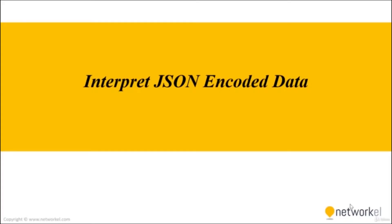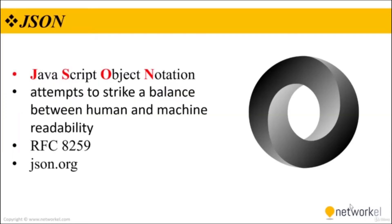In this section we will talk about interpreting JSON encoded data. JavaScript Object Notation attempts to strike a balance between human and machine readability. Armed with a few JSON rules, most humans can read JSON data and confidently interpret the data structures defined by the JSON data. At the same time, JSON data makes it easy for programs to convert JSON text into variables, making it very useful for data exchange between applications using APIs. You can find the details of JSON in RFC 8259 and at www.json.org.